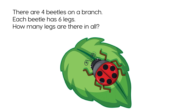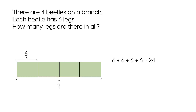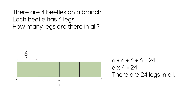There are four beetles on a branch. Each beetle has six legs. How many legs are there in all? 6 plus 6 plus 6 plus 6 equals 24. 6 times 4 equals 24. There are 24 legs in all.